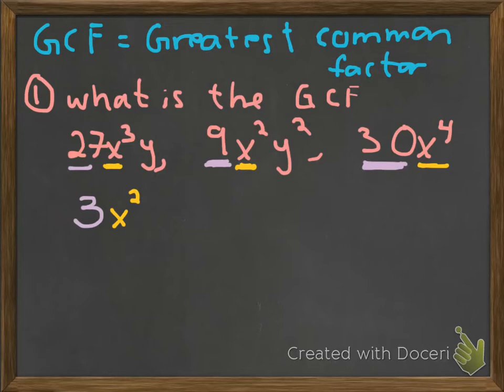And then, you do the exact same thing for the y's. So, you look at all of the y's. First term has 1 y. Second term has 2 y's. Third term, however, has no y's. So, what's the greatest common factor? Well, there is no y's in common. So, there's no y's that count as the greatest common factor. So, our GCF in this problem is the 3 x squared. So, that's the idea of what greatest common factor is.